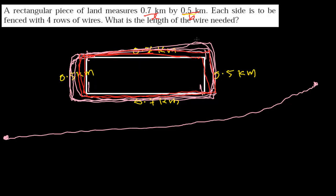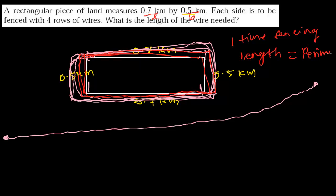Because fencing this whole land one time is just the perimeter. One time fencing length equals the perimeter. So let's first find out the perimeter of this rectangular piece of land.